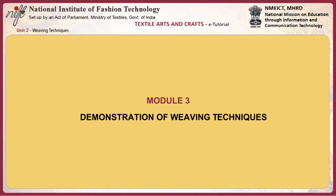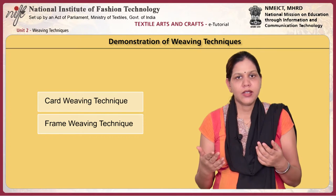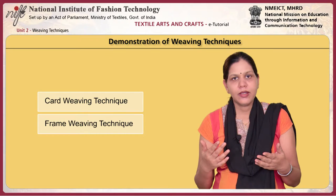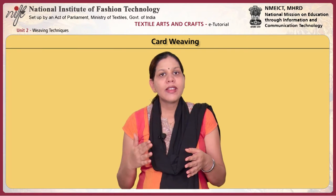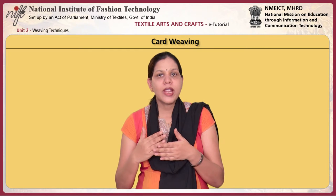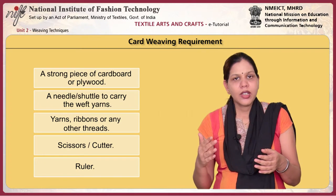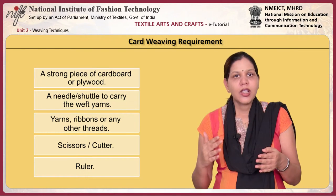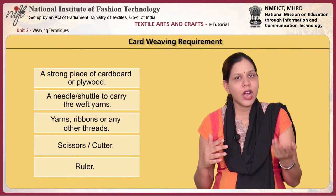In this module, you will learn about different weaving techniques. There are two important weaving techniques: card weaving and frame weaving. Card weaving can be done on square, rectangular or circular cards. Any size or type of card which is strong and thick enough to take the tension of threads without bending can be used. The board needs to be prepared before beginning to weave. The method is to wind warp threads across both sides of the card or on a single side of the card. The requirements for card weaving are a strong piece of cardboard or plywood, a needle shuttle to carry the weft yarns, yarns, ribbons or any other threads, scissors or a cutter and a ruler.